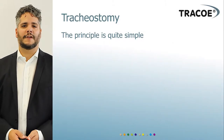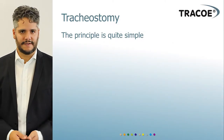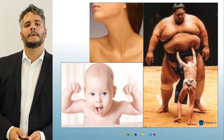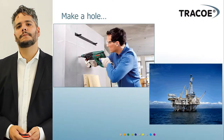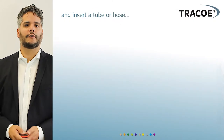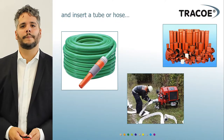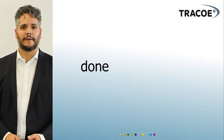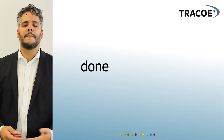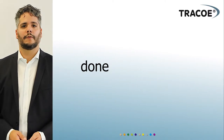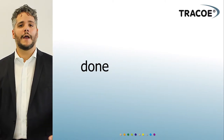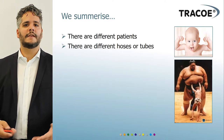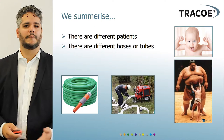When we talk about tracheostomy, the principle seems quite simple. You take a neck, you make a hole in that neck, and you insert a tube or hose into the hole — and the tracheostomy is done. Obviously, it is not that simple. There are many factors that need to be considered, including a wide range of different patients, necks, and many different types of tubes that can be used.